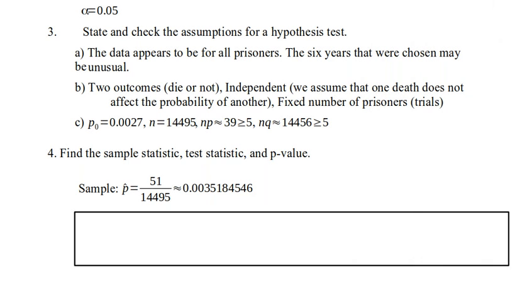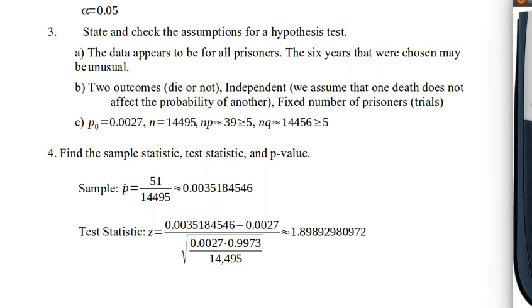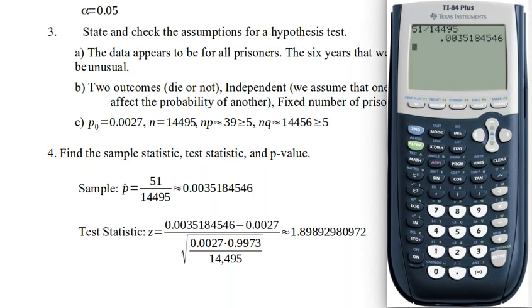The next question asks us for the test statistic. So we use the formula for that. We just computed P hat. We know that P null is 0.0027. And then we divide it by the square root of PQ over that total N. So let's put this in our calculators. So we've already got P hat. So I'm just going to press subtract. So it takes that previous number.